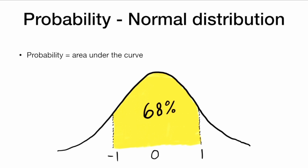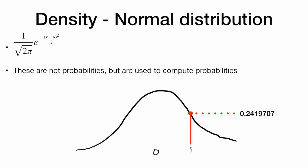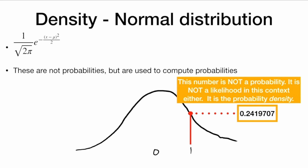But what about continuous distributions like a normal distribution? In a normal distribution, the probability is represented by the area under the curve of a density function. So the normal bell curve with standard deviation 1 is described by this density function. Now this function does not tell us probabilities — they are used to compute probabilities. We integrate the function and find the area under the curve to compute a probability. So here we have the density of a normal distribution at 1, and this number is not a probability, and it is also not a likelihood in this context either. It is a probability density — it's related to probability and it's used to compute probabilities.